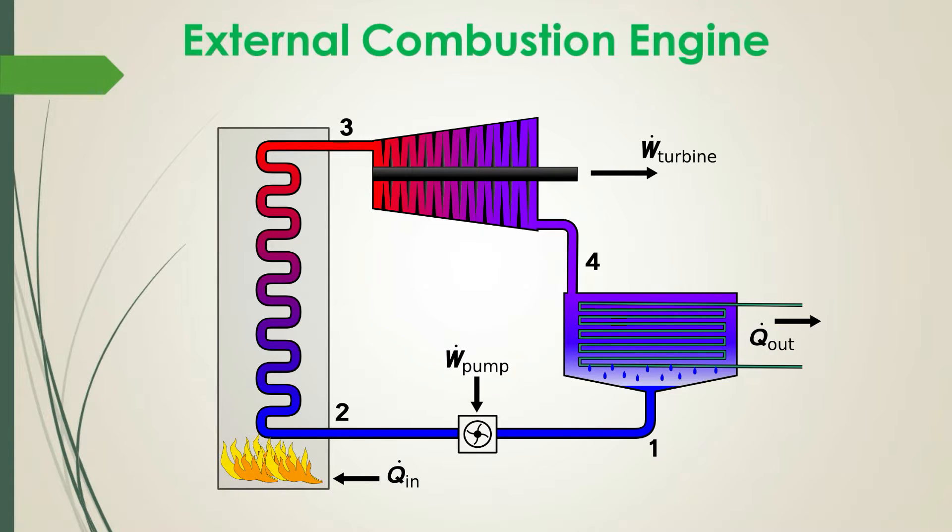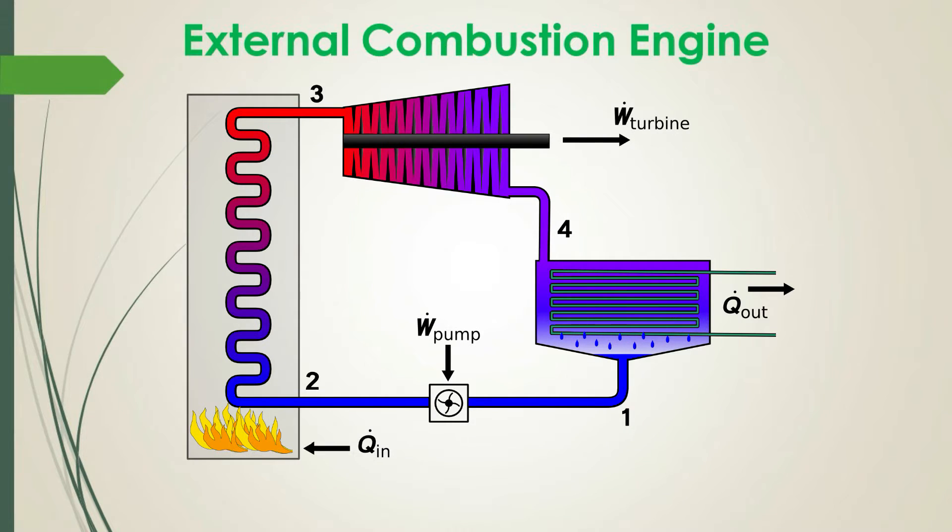The liquid state fluid can be pumped to the system again. A typical arrangement of external closed cycle engine is, condenser, pump, boiler, engine mechanism like turbine, piston, and cylinder.